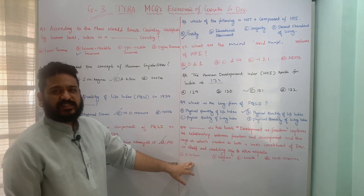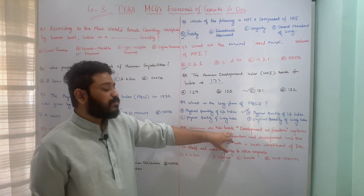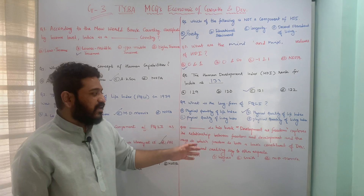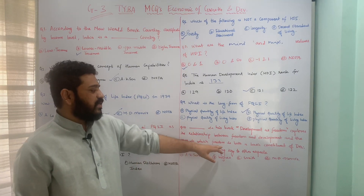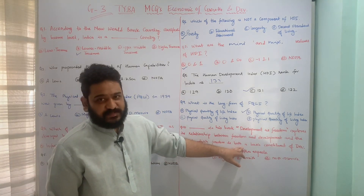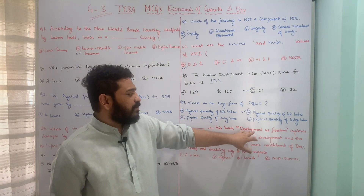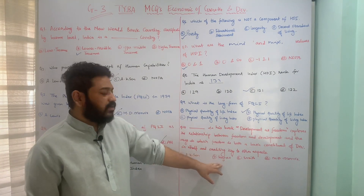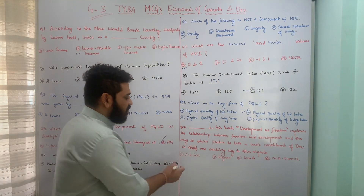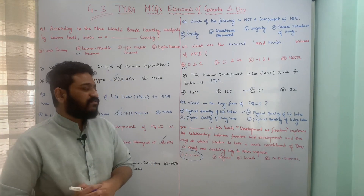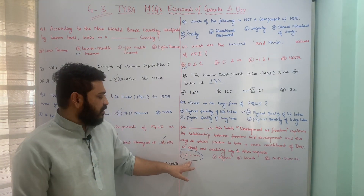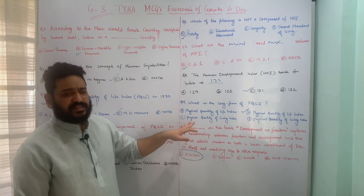The last question in this segment asks: who, in his book 'Development as Freedom,' explores the relationship between freedom and development, and the ways in which freedom is both a basic constituent of development in itself and an enabling key to other aspects? Options are Amartya Sen, Keynes, Smith, or M.D. Morris. The correct answer is Amartya Sen — option A, A.K. Sen, is the correct answer.